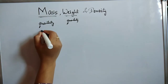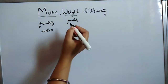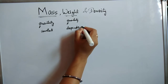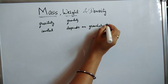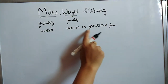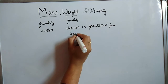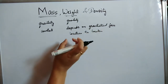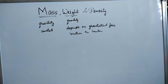Mass of any object is constant. But weight of any object depends on gravitational force, so it varies from location to location. If the location of an object is changed, weight varies, but mass remains constant.